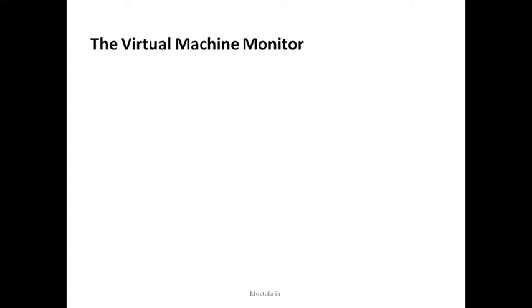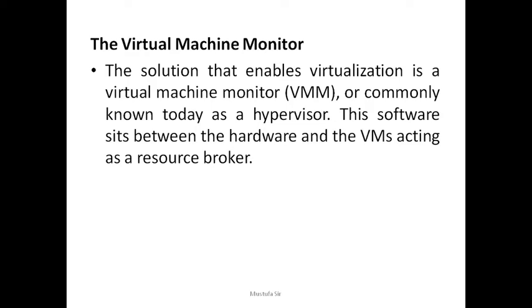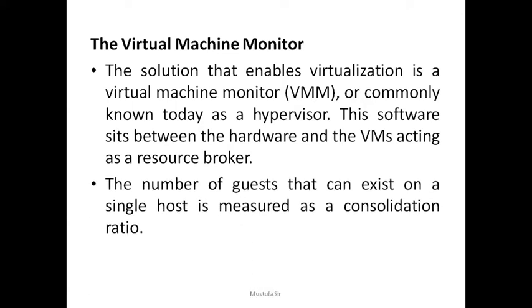The solution that enables virtualization is the virtual machine monitor (VMM), commonly known today as a hypervisor. This sits between the hardware and the virtual machine, acting as a resource broker. The hypervisor allows multiple virtual machines to safely coexist on a single physical server host and share those host resources. The number of guests on a single host is measured as a consolidation ratio — for example, a host supporting 6 virtual machines has a consolidation ratio of 6 to 1.